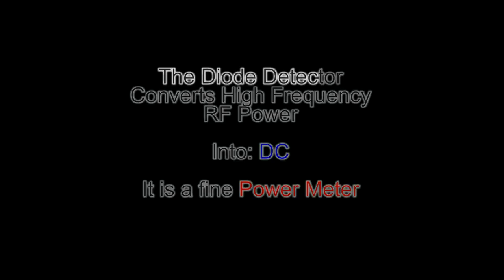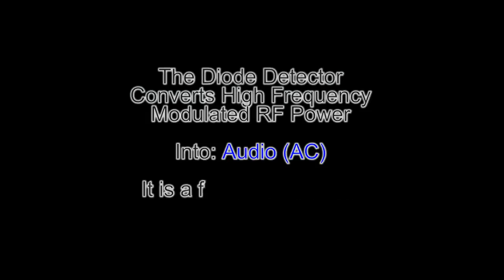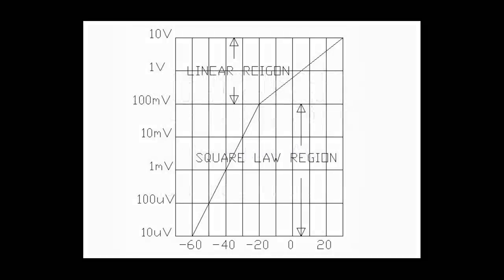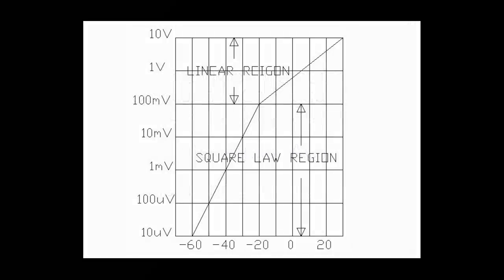It does an adequate job as a power detector. It can be used as a foundation for a power meter. We're using it to strip off the audio in a demodulator fashion. It can handle signals from minus 60 dBm all the way up to probably almost plus 20 dBm. That's a good dynamic range for such a simple device.